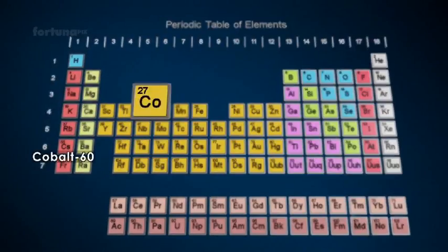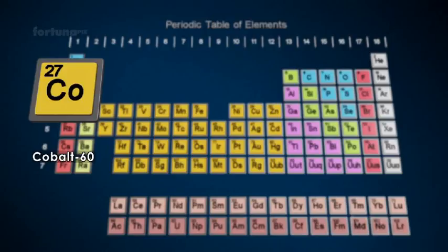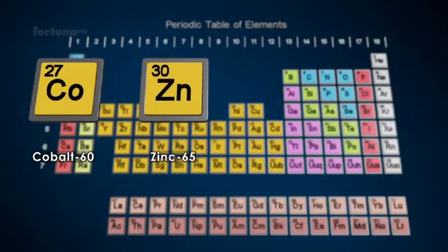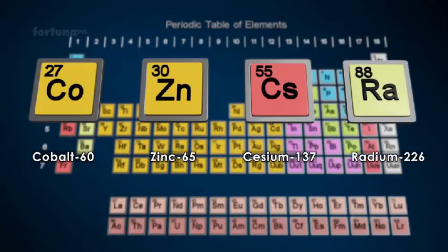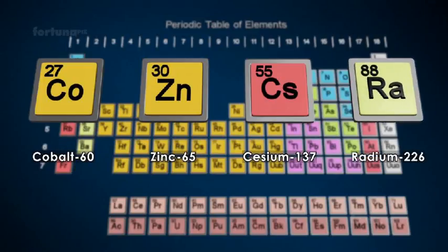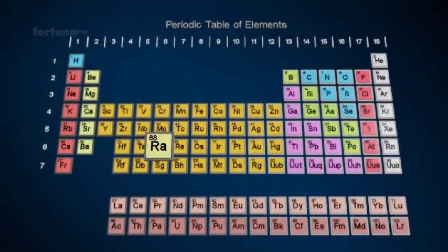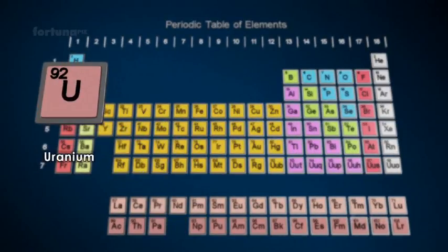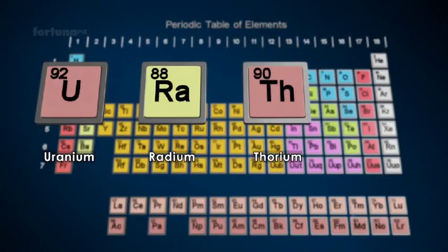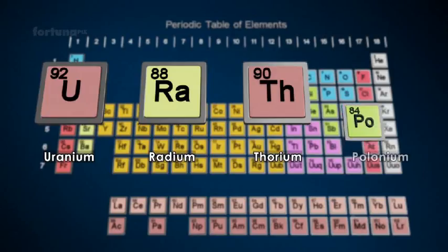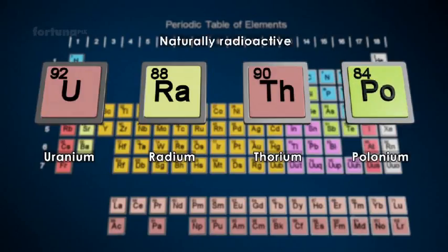Cobalt-60, zinc-65, cesium-137, and radium-226 are some of the elements that will undergo gamma emission. Other chemical elements such as uranium, radium, thorium, and polonium are naturally radioactive.